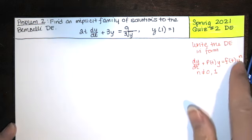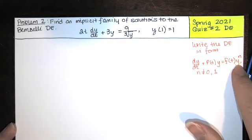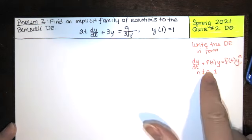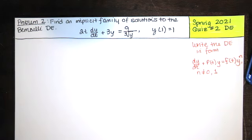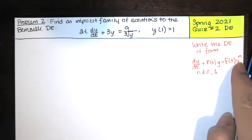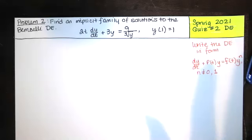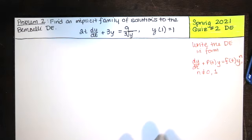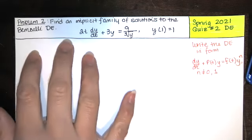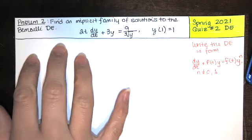If n were equal to one, we'd have a function of t times y, and we could subtract that from both sides and simplify further. It would be first order linear and also happen to be separable. But if that power of y is anything other than zero or one, and the differential equation can be written in this form, the DE is Bernoulli.